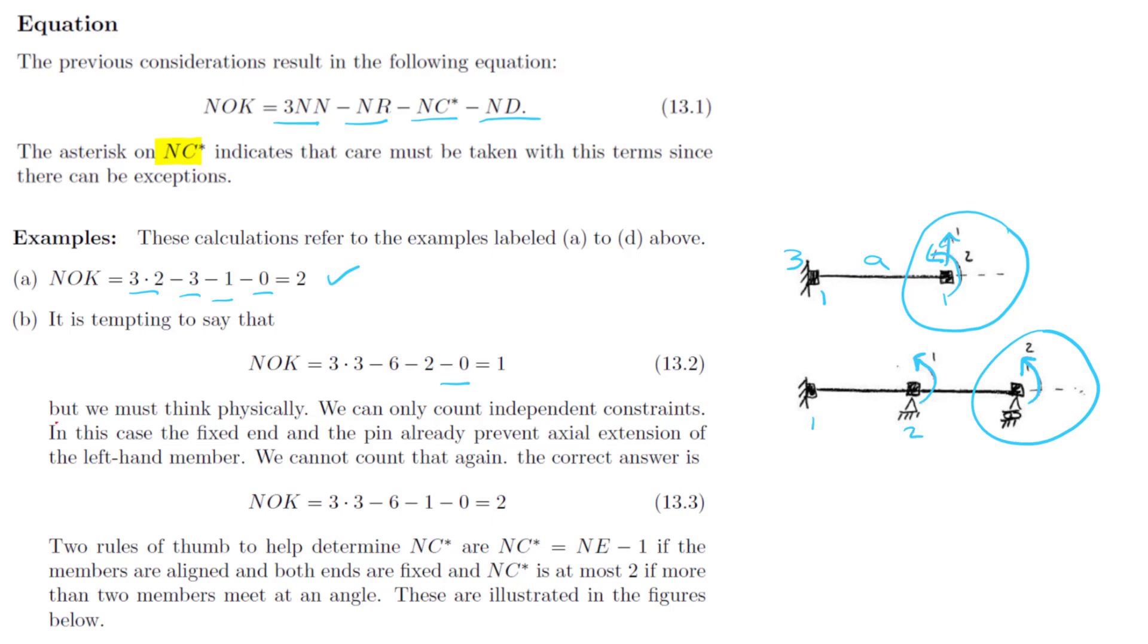We have one, two, three nodes, three restraints here, two here, and one here for a total of six. An axial constraint in the left side and an axial constraint in the right side member for two. But this gives us a value of NOK of 1 which isn't in agreement with the physical argument. Let's see what's going on here.